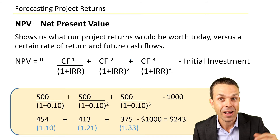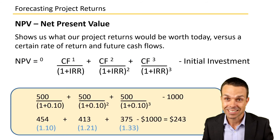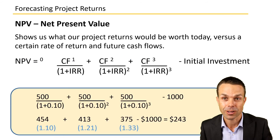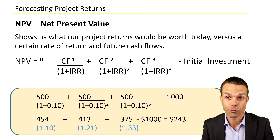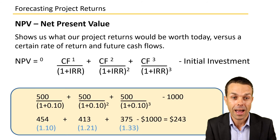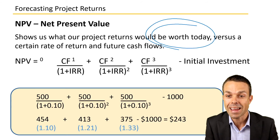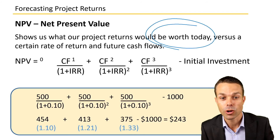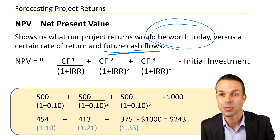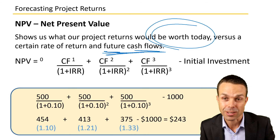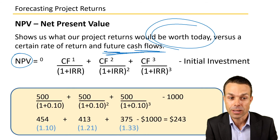Net Present Value is a really useful financial technique to figure out what project returns would be worth today versus a certain rate of return and the future cash flows we expect to receive from the project. Net Present Value equals the sum of each period's cash flow divided by (1 + internal rate of return) raised to the power of that period.